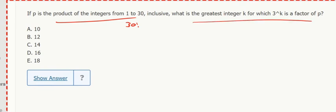So the greatest integer k for which 3 to the k is a factor of p. It's important to put this in our own words. Greatest integer k for which 3 to the k is a factor of p, which is 30 factorial.